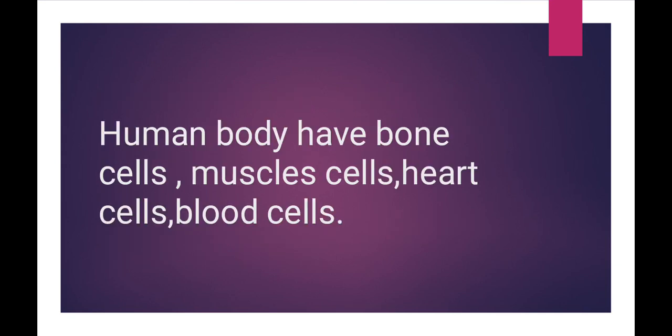The human body has bone cells, muscle cells, heart cells, and blood cells. Insaani jism ke paas bone cells – yaani haddiyon ke cells – muscle cells yaani patthe, heart cells yaani hamara dil, aur blood cells yaani hamare khoon ke andar maujood jo khaliyat paaye jaate hain.